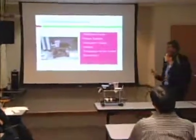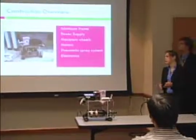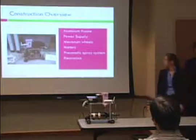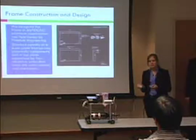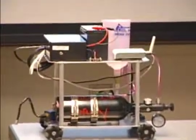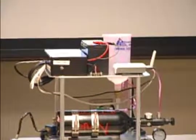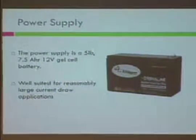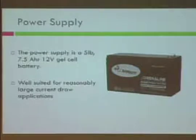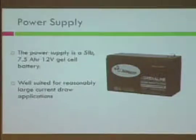The basic mechanical overview covers the aluminum frame, power supply, wheels, motors, spray system, and electronics. For the frame construction, it's built from aluminum and designed in AutoCAD. We wanted it to be about the size of a piece of paper — 8 by 12 inches and 8 inches high. The top plate holds all the electrical components and the base plate holds all the pneumatic devices. Our power supply is a 12-volt gel cell battery, 7.5 amp-hours, weighing 5 pounds. We originally wanted to use D-cell batteries but they couldn't produce enough current for our application, so this is a nice solution.